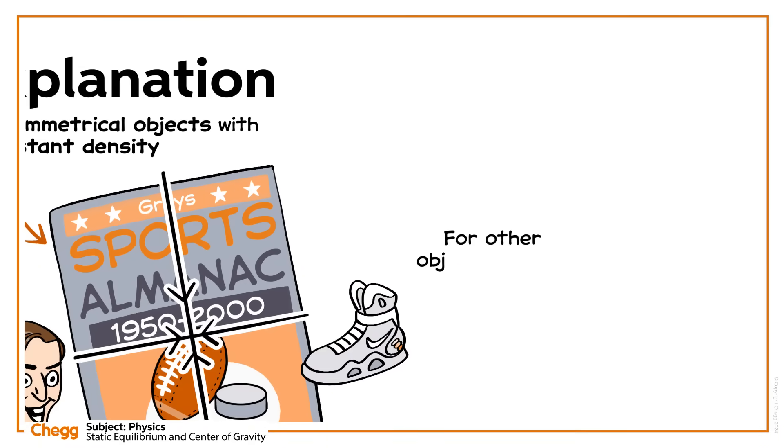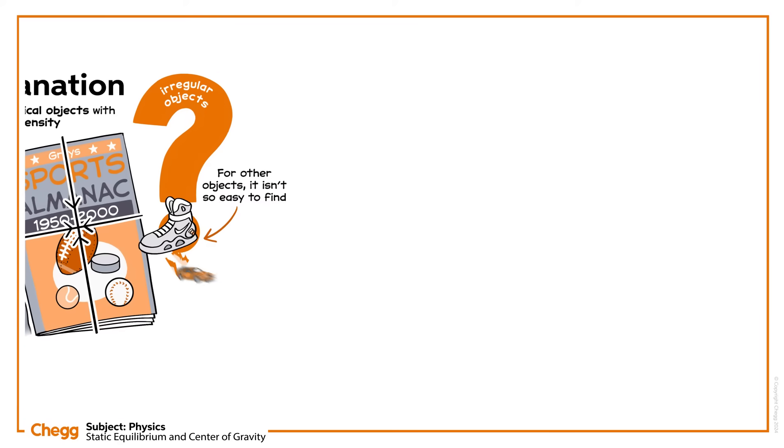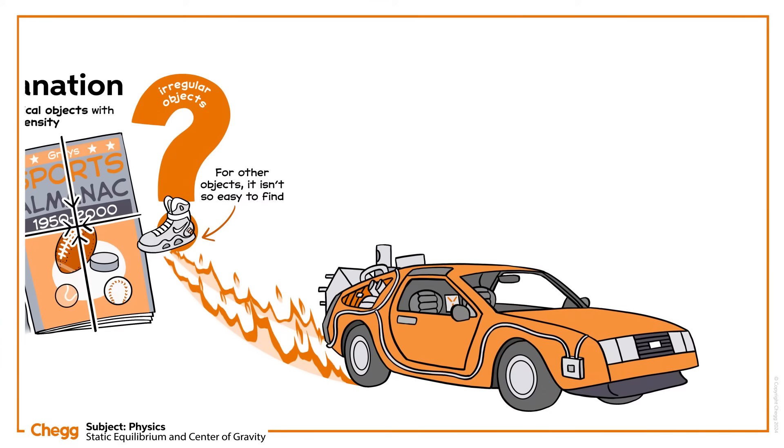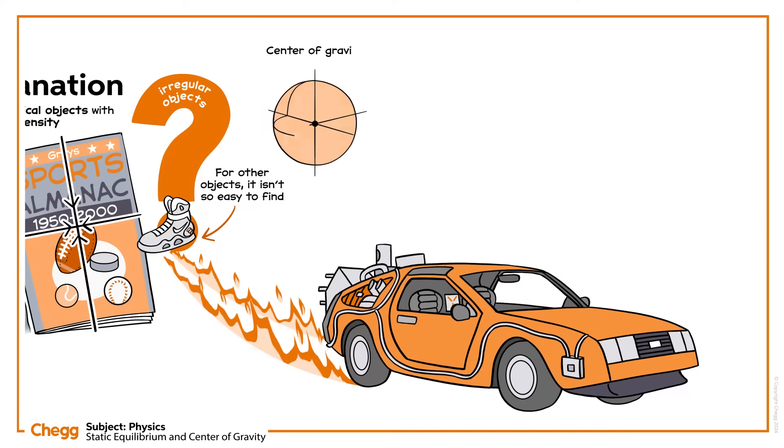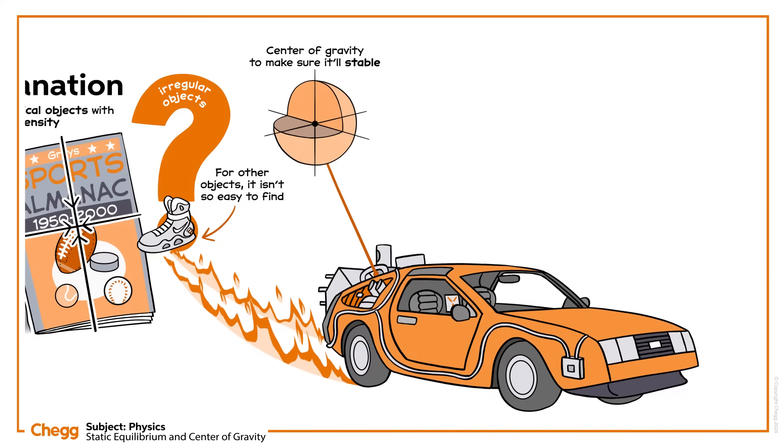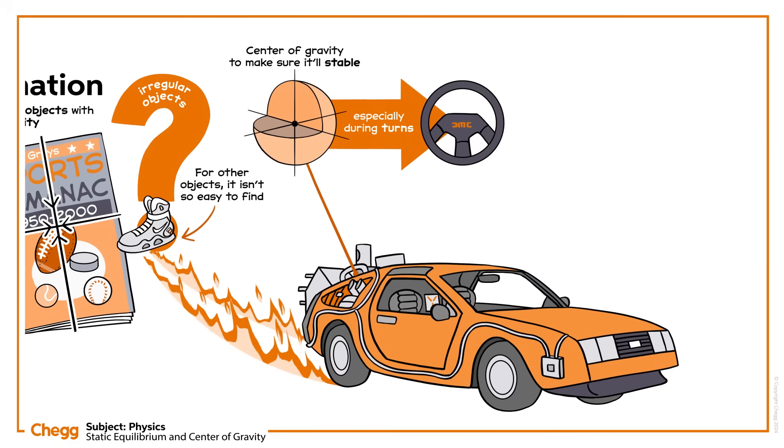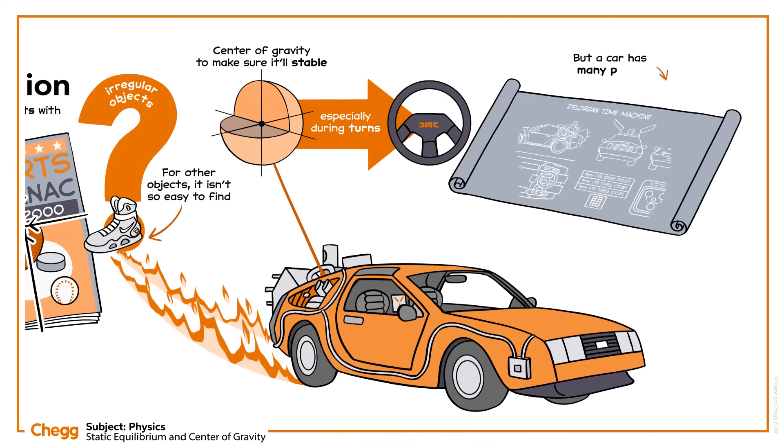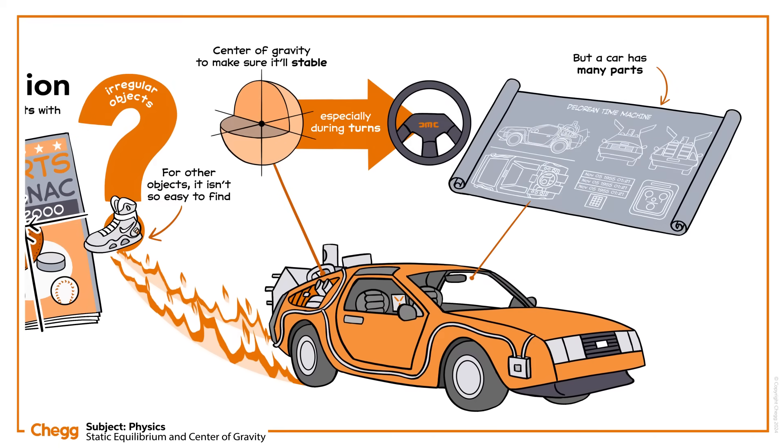For other objects, it isn't so easy to find. Consider a car. Manufacturers need to consider its centre of gravity to make sure it'll be stable, especially during turns. But a car has many parts, from the engine to the wheels to the windscreen, some heavier than others.